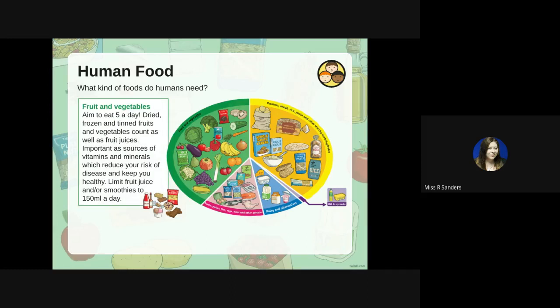The biggest category, on par with carbohydrates, is fruit and vegetables. We aim to eat five of these a day — dried, frozen, and tinned fruits and vegetables count, as well as fruit juices. It's an important source of vitamins and minerals which reduce your risk of disease and help keep you healthy. However, you should limit fruit juices and smoothies to 150 mils a day because they contain a lot of sugar.